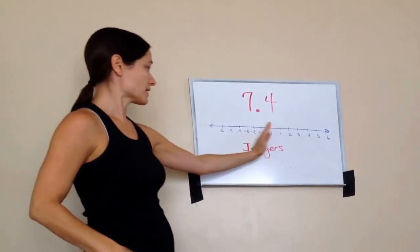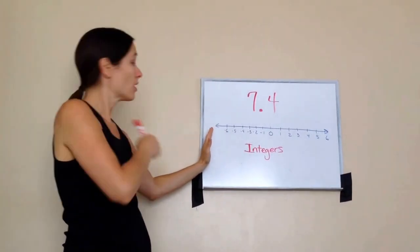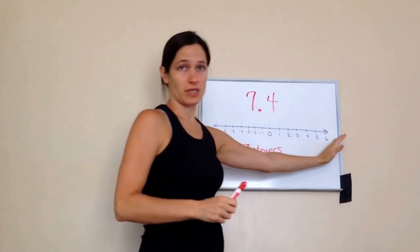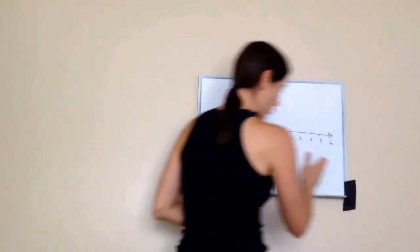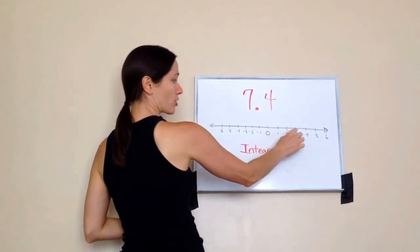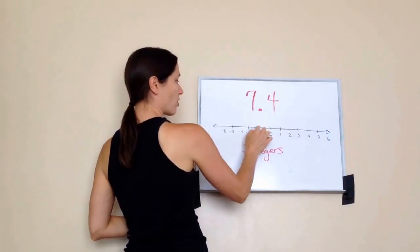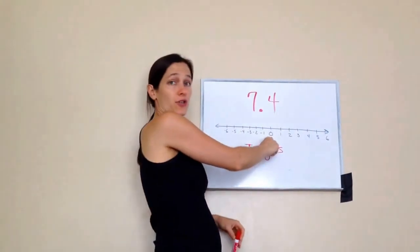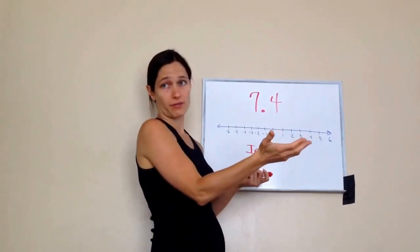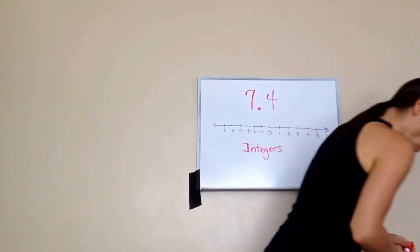As I said, anything less than zero becomes a negative number. Anything greater than zero is always a positive number. Now, integers are separated by these tick marks. Each of these marks are called tick marks. This zero is considered neither positive nor negative. It's just considered the origin.